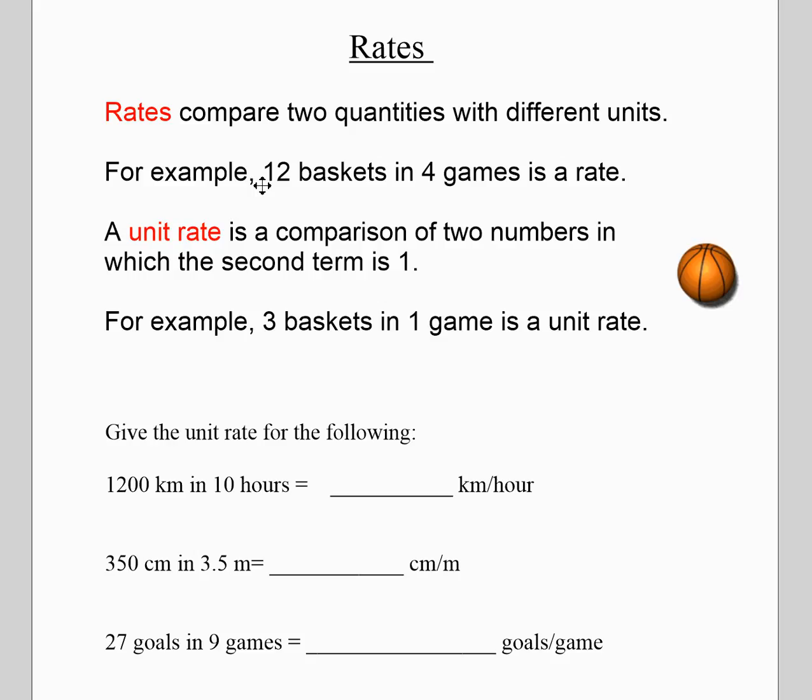If you're going 1,200 kilometers and you're doing it in 10 hours, how do you get the unit rate? You just do 1,200 divided by 10. You don't have to show your work, I'm just showing it here so that you know where it comes from. And that would be a speed of 120 kilometers per hour.